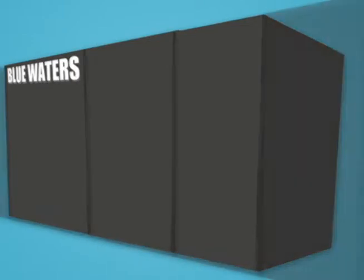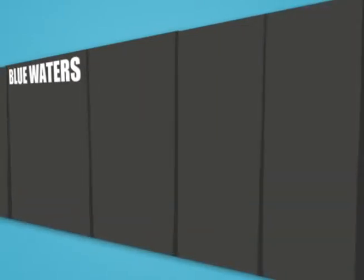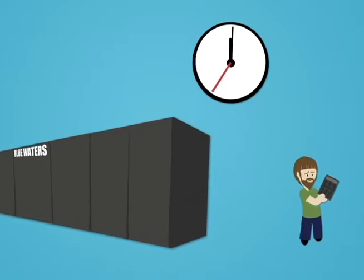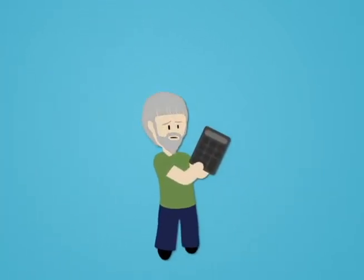NCSA's Blue Waters supercomputer can do quadrillions of calculations every second. If you challenge Blue Waters to a math race, in the first second the supercomputer would finish thousands of trillions of calculations, while even the smartest, fastest human math expert would have only finished one. It would take a person millions of years to do the number of calculations that Blue Waters can do in one second.